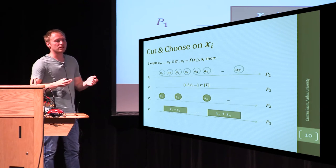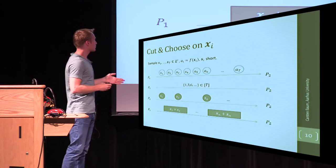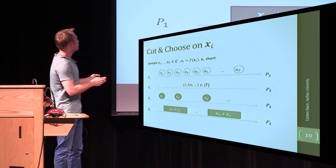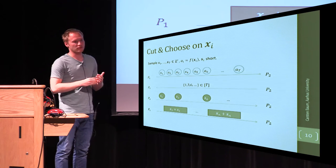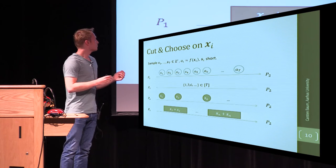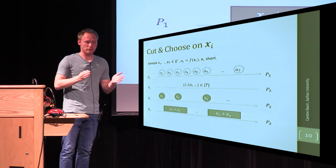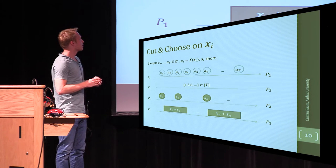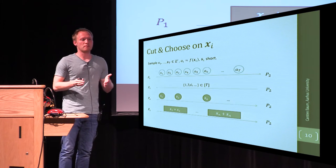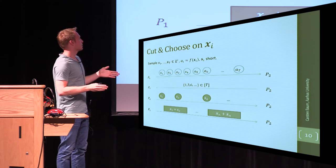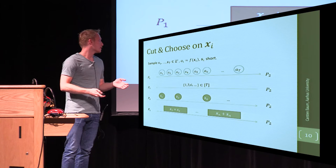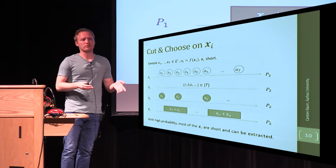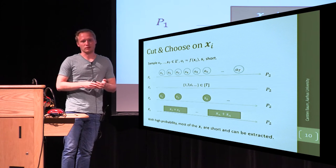So, what do we intuitively achieve by doing this? Using the cut-and-choose, what we get is that most of the auxiliary values that were not opened are also short and do also exist. Now, if we send sums with all the secrets that we have, what is actually true is that most of the values you want to prove knowledge of do exist and are short.